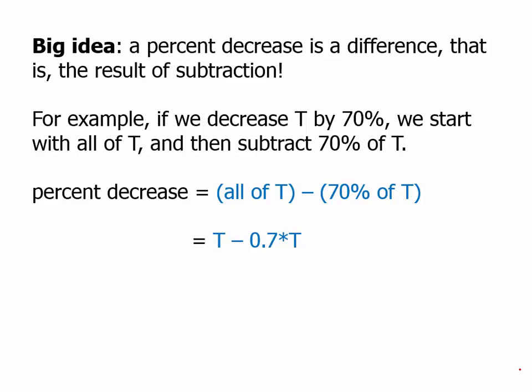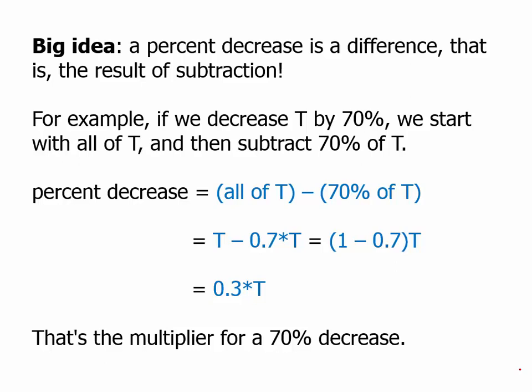We can factor out the T. So we have 1 times T minus 0.7 times T. That's 1 minus 0.7 times T, and 1 minus 0.7 is 0.3. So that's the multiplier for a 70% decrease: 0.3.